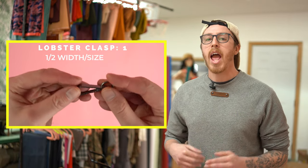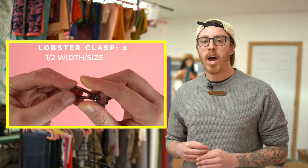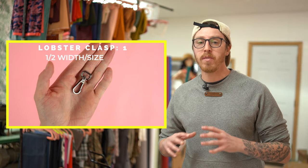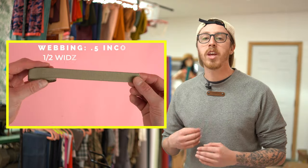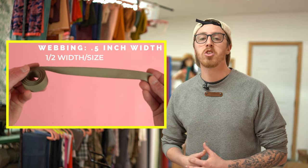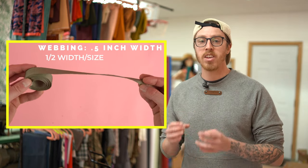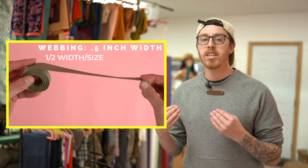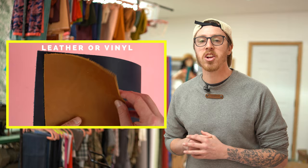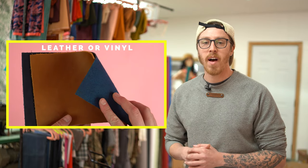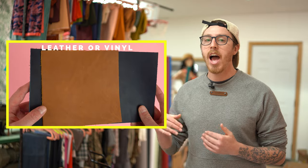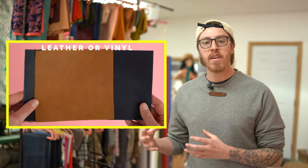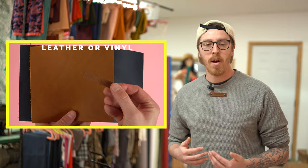Alright moving on to the supplies for the last project which is the lanyard. These are super fun to make and really easy and you can make a lot with very minimal supplies. You'll need one lobster clasp and I'm using a half inch in the video. You'll need one yard of a half inch webbing and I found a half inch to be the perfect size. It's just small enough to make it nice lightweight and compactable. And lastly you're gonna need your leather or vinyl. So cut out your pattern piece and let's get started.